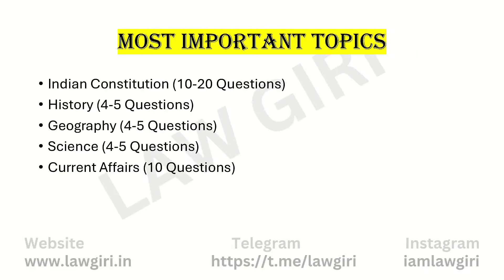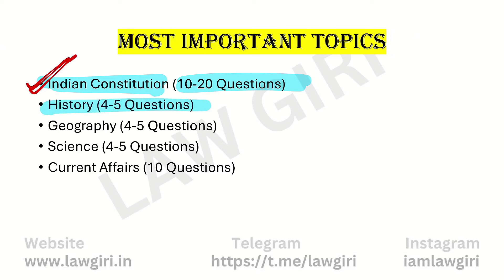Now, here are the most important topics. The Indian Constitution has been seen heavily — sometimes 10 to 20 questions have come from it, meaning the distribution is not followed. So 10 to 20 questions have come from Indian Constitution. History: 4 to 5 questions. Geography: 4 to 5 questions. Science: 4 to 5 questions. Current affairs: exactly 10 questions come.